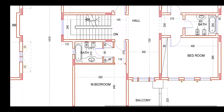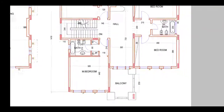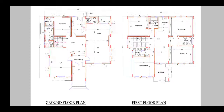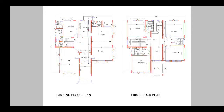So this is our G+1 floor plan with four bedrooms — one bedroom on the ground floor and four on the first floor. The ground floor bedroom can be used for guests or utilized in many other ways. I hope you found this plan helpful. Please like, share, and subscribe — I really appreciate your support. Thank you.